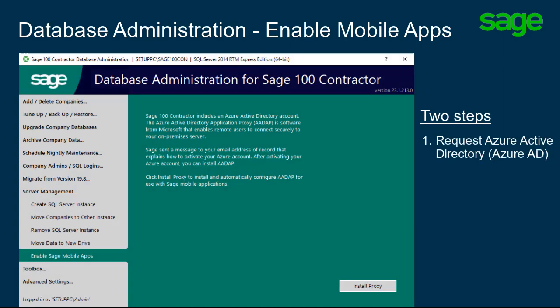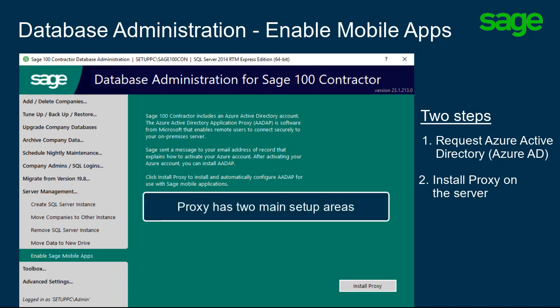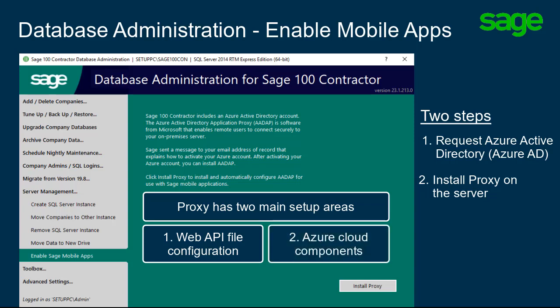When the activation completes, you can install the proxy. This takes you to the second step in the process, which is to install the proxy on the server. For this process, there are two main areas for the setup: one is the file configurations for the web API to communicate with the server, and the second part is the Azure components in the cloud.